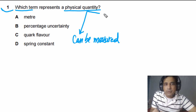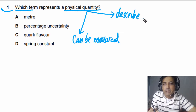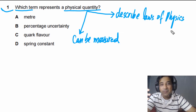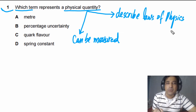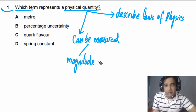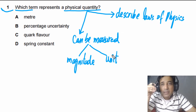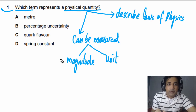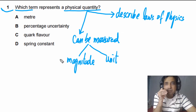A physical quantity must also obey laws of physics. Love and friendship do not obey laws of physics, so they are not physical quantities. A physical quantity must have magnitude — and it can also have a unit, though a unit is optional. For example, strain is a physical quantity, but it is a ratio between two quantities and has no unit. So a physical quantity must have magnitude and should have a unit most of the time.